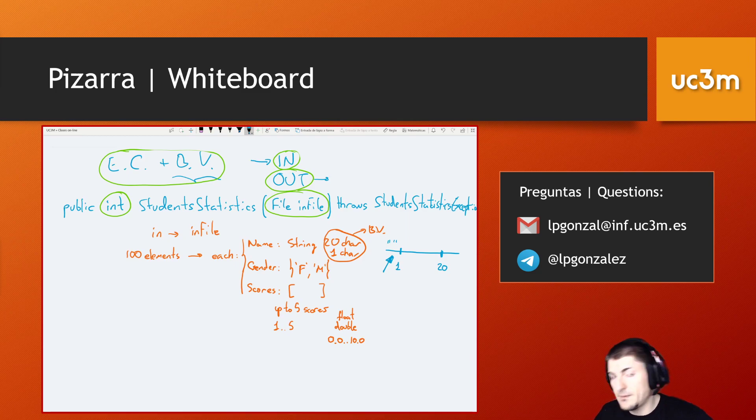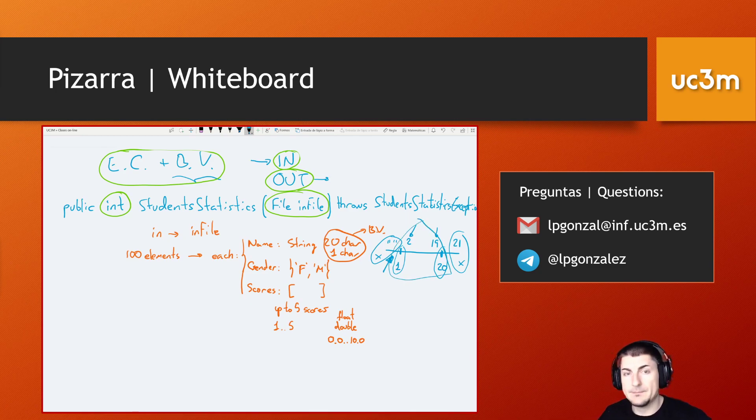Then for the valid case, we should check one character, that is the boundary, then two characters as well because this is the following value, the following valid value to the boundary limit. Then 19, 20 again the boundary value, and 21, this should return an error as well. So we are checking here two non-valid cases, and then the rest are valid.